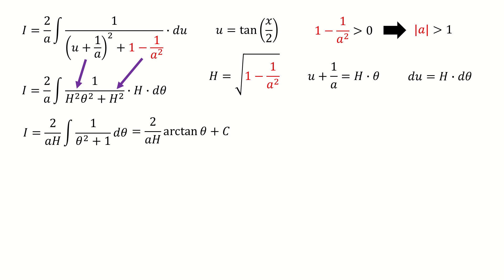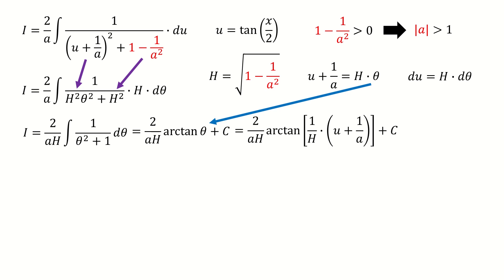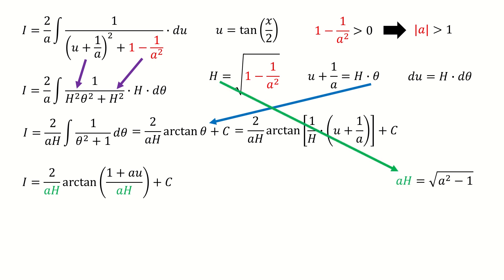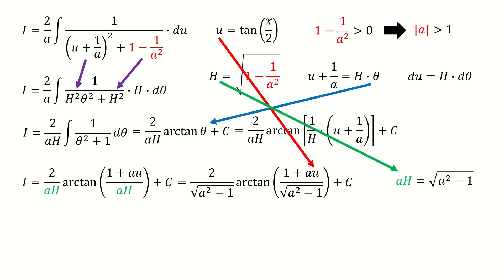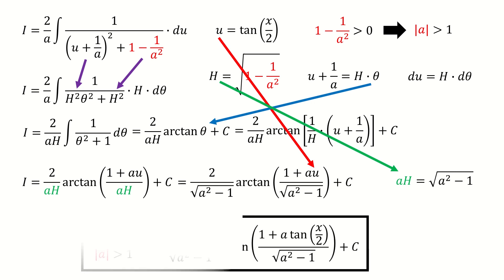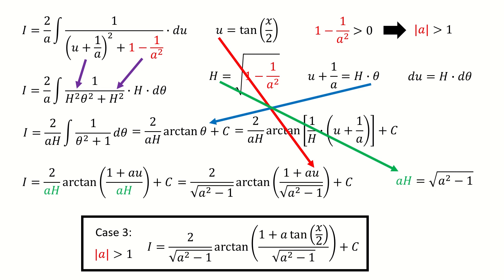This leaves a simple integral equal to arctangent of theta. We then plug in theta and simplify the component inside the arctangent function. For the term aH colored in green: since capital H equals the square root of the red term, multiplying both sides by a gives aH equals the square root of a squared minus 1. We replace aH accordingly, then replace u with tangent of half x to get the answer for case 3. Case 3 is much more complicated than cases 1 and 2, so I call it wolf-like.